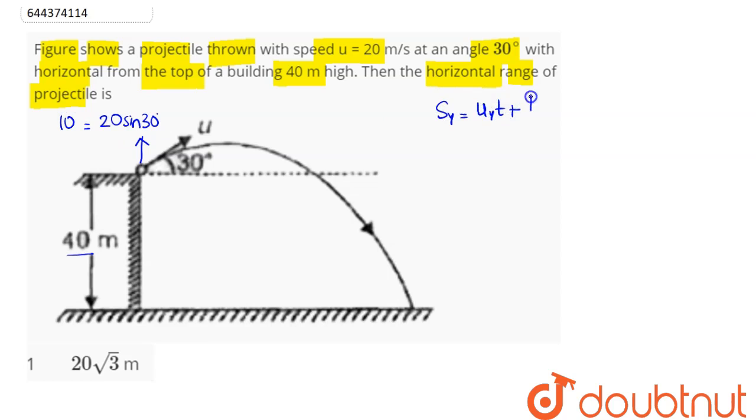can be written as ut plus half g t square. This gives us the time of flight of the projectile. Displacement in y direction is minus 40. Initial velocity in y direction is 10, time of flight is t.